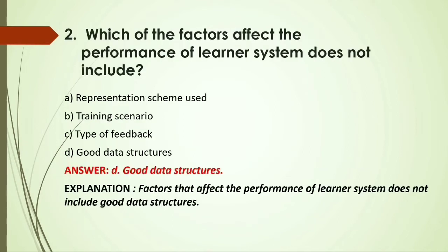MCQ: Which of the factors affecting the performance of the learner system does NOT include — A) Representation scheme used; B) Training scenario; C) Type of feedback; D) Good data structure. Answer: D, good data structure, because good data structure does not affect the performance of a learner system.